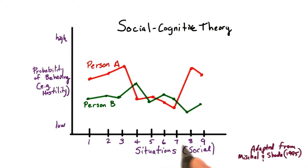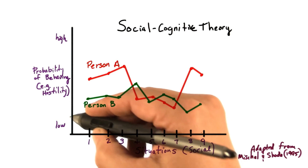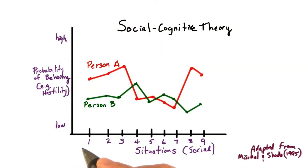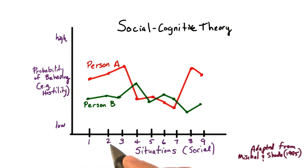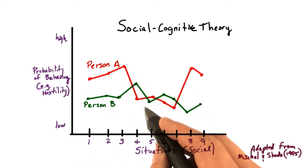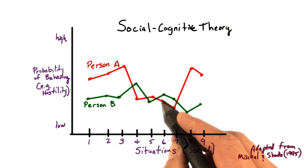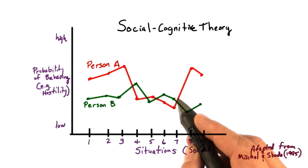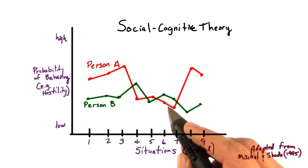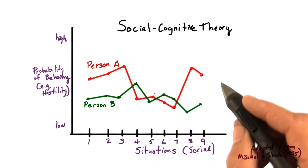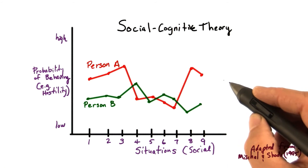On the horizontal axis we have the social factors, or the situation, and on the vertical axis we have the probability that the person will act in a certain way — in this case, hostilely. You can see in this profile that person A acts more hostilely than person B in many of the situations, but not all. And if you took an average across all situations, person A would be more hostile than person B.